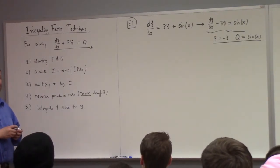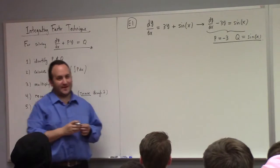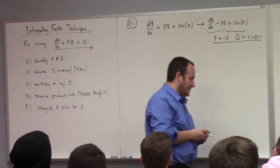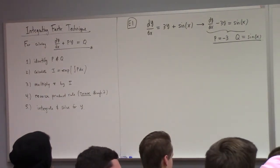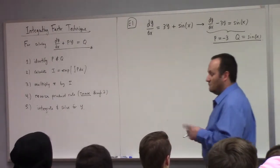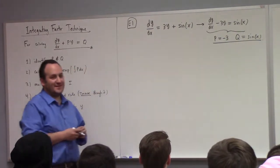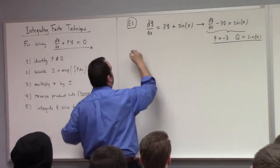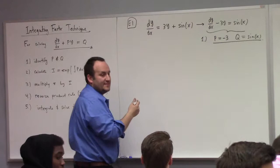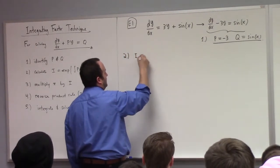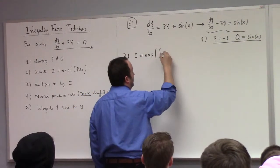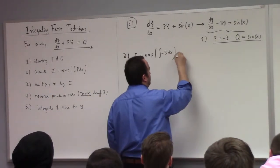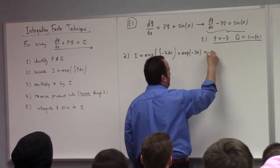Point number three, you multiply the star equation by i. Number four, reverse product rule. And step number five, integrate and solve for y. So that's the technique in a nutshell. Let me go through another example. Suppose I was trying to solve dy/dx equals 3y plus the sine of x. So the first order of business is to identify p and q. I need to rewrite this as dy/dx minus 3y equal to the sine of x. So what's my p? q is sine x, can you tell me p? Negative three. Even a CFAW can do it.